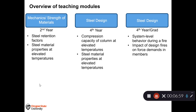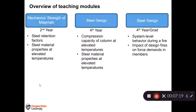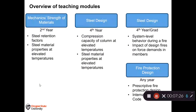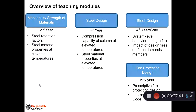The fourth teaching module looks at system-level behavior, building upon the column compression capacity work and then examining the entire system. How do forces in columns and beams change when the design fire changes? It looks at the impact of design fires on force demands in the members. The last teaching module covers fire protection design — both prescriptive fire protection design and the different types of fire protection and how they actually work, which is also really important for students to understand.